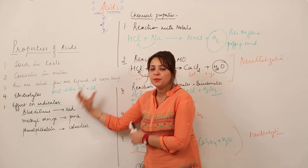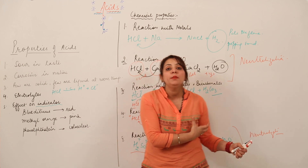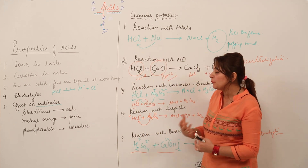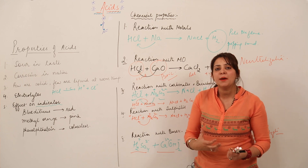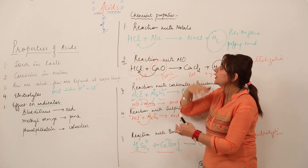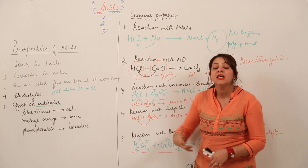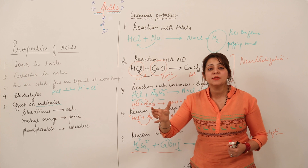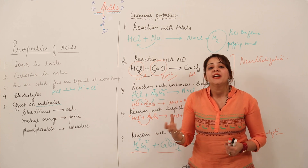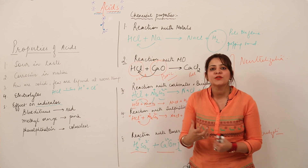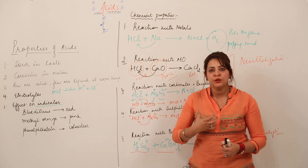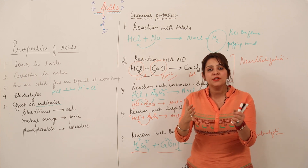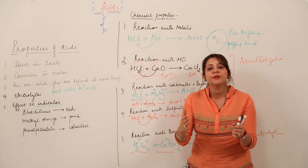So it is clear what the physical properties of acids are and what the chemical properties are. You can take an example of any acid, any metal oxide, any metal, or any metal carbonate — the general product will be the same. It is just a matter of which metal or salt you are using; the general method of attempting the reaction remains the same.